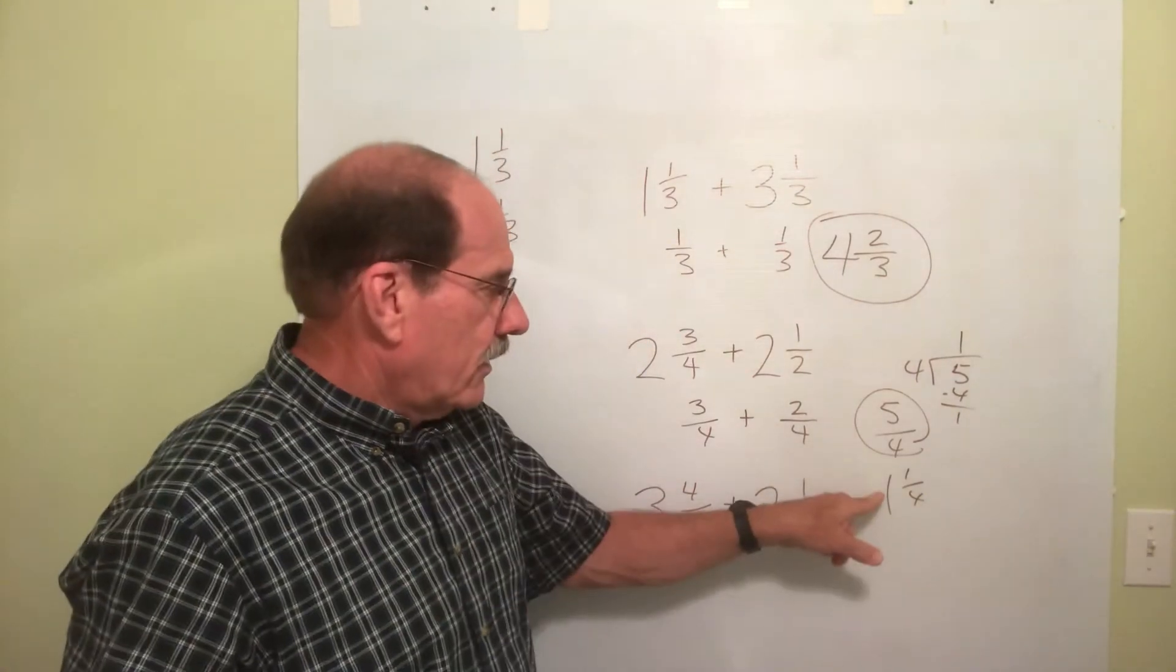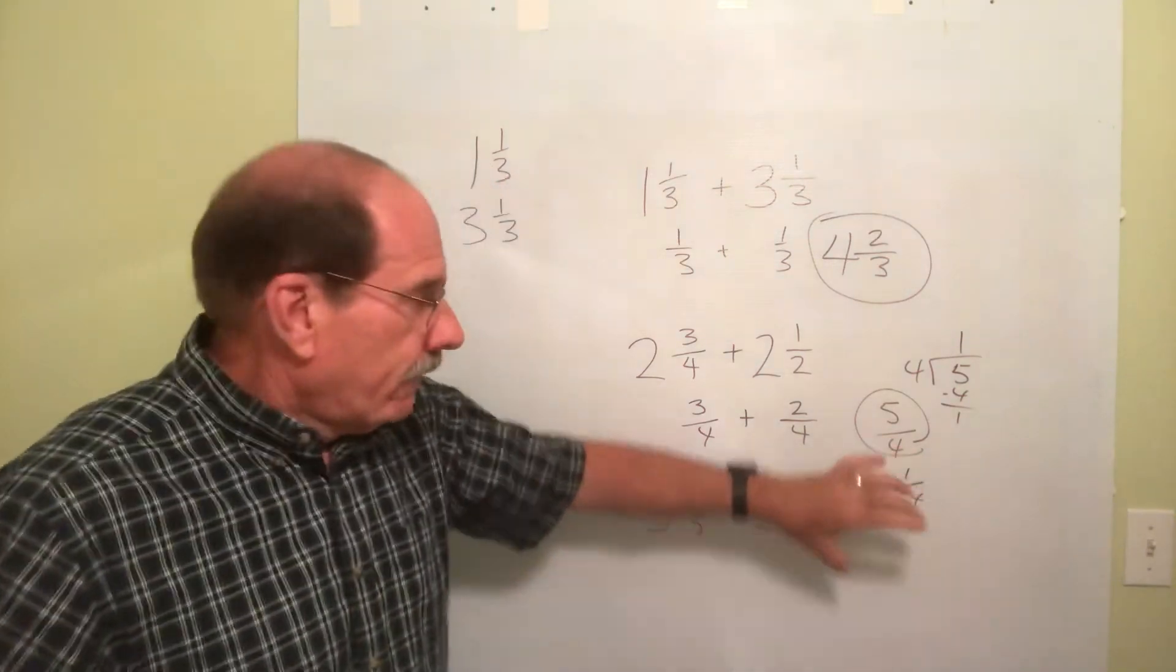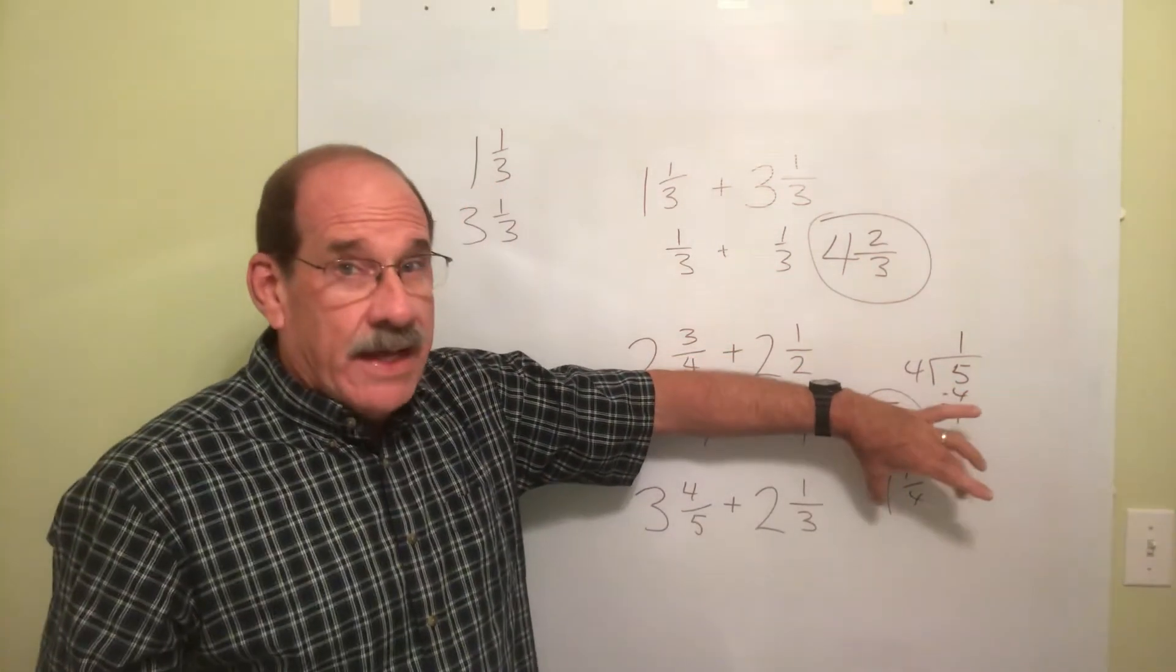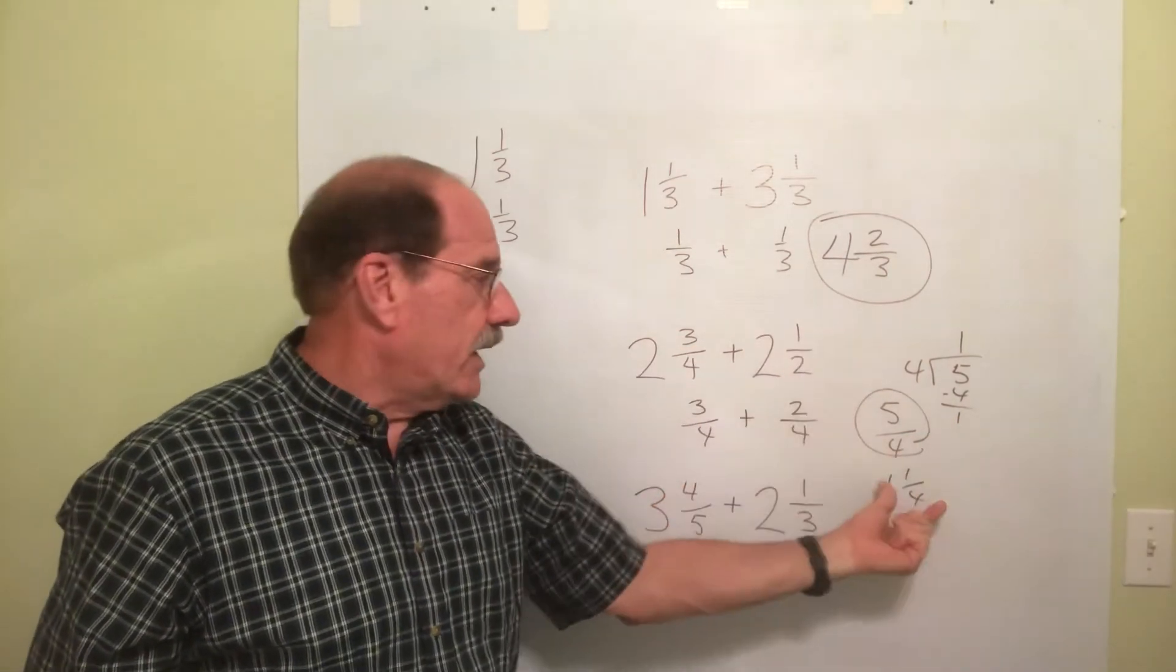A quick double check. 1 times 4 is 4 plus 1, that's 5, 5 fourths. So 1 and 1 fourth is now, that's not the final answer. That is merely what 3 fourths plus 1 half becomes.